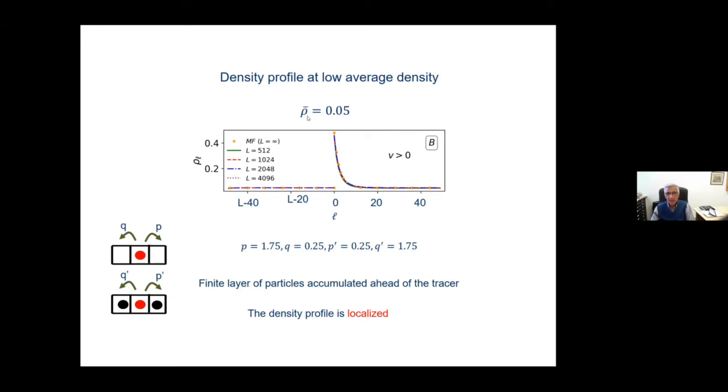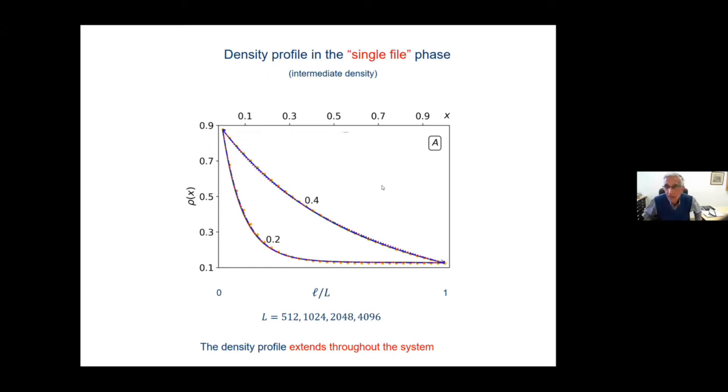Now you increase the density. When you increase the density, the width, the thickness of this layer becomes broader and broader, and at some critical value, it becomes macroscopic. So here, what I plot is the density profile at high density, 0.2 or 0.4, but I plot it as a function of ℓ over L. So it's a scaled thing, it scales with the system size. The thickness of this layer scales with the system size, and you get more and more particles as you increase the density, more and more particles accumulating there. And so the velocity in this phase goes to zero, basically, of the tracer, because it tries to push more and more particles as it moves, and the velocity becomes zero.